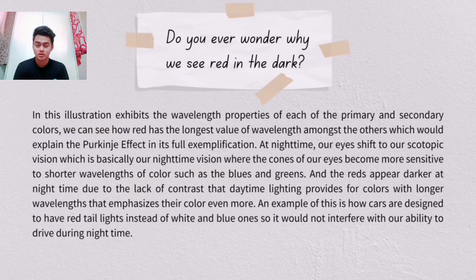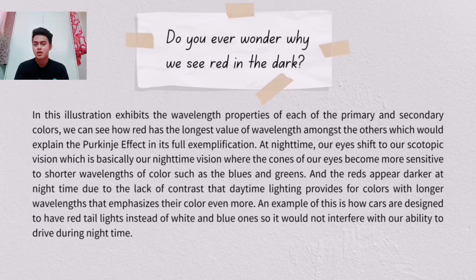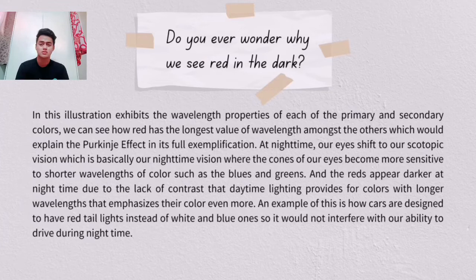Do you ever wonder why we see red differently in the dark? This illustration exhibits the wavelength properties of each of the primary and secondary colors. We can see how red has the longest value of wavelengths amongst the others, which explains the Purkinje effect. At nighttime, our eyes shift to scotopic vision — our nighttime vision — where the cones of our eyes become more sensitive to shorter wavelengths of colors such as blues and greens, and red appears darker at nighttime due to the lack of contrast that daytime lighting provides for colors with longer wavelengths.